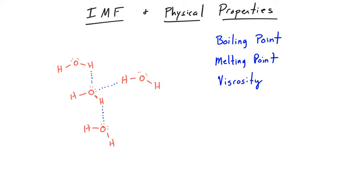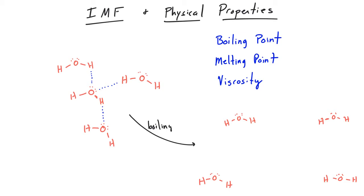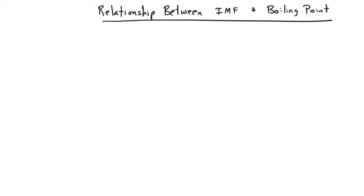Let's take a look at boiling point first. The relationship between boiling point and intermolecular forces is that the stronger the intermolecular force, the higher the boiling point. In the process of boiling, you're actually separating the molecules from each other. When a substance boils, the intermolecular forces between the molecules are broken, and the molecules separate and become very far apart. Molecules in the liquid phase are attracted to each other by intermolecular forces, while molecules in the gas phase are too far apart to have intermolecular forces. So the stronger the intermolecular force, the higher the boiling point.